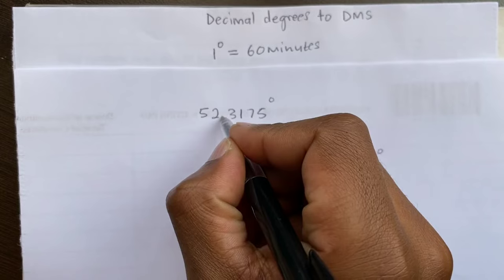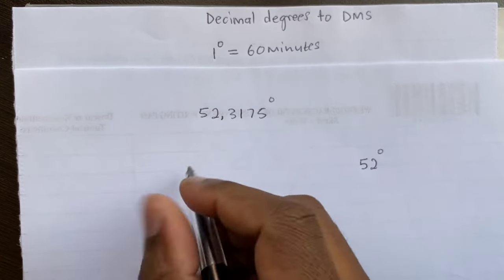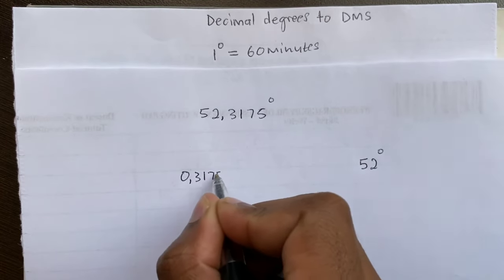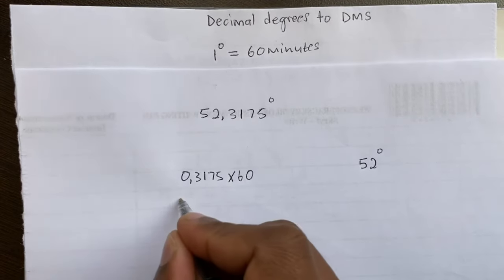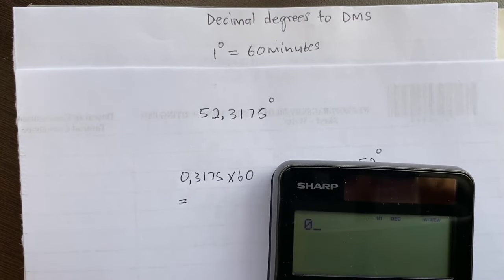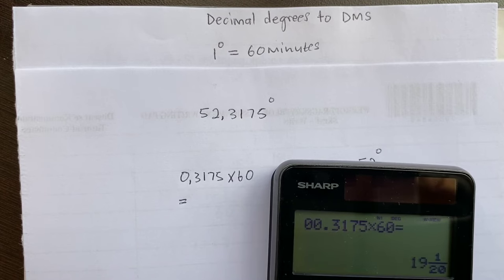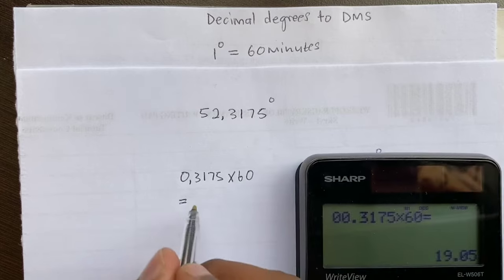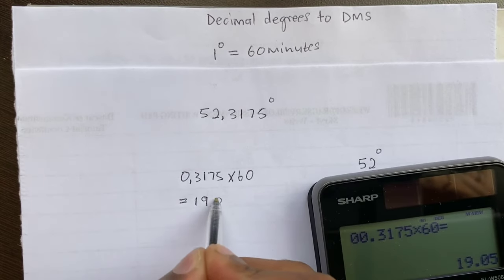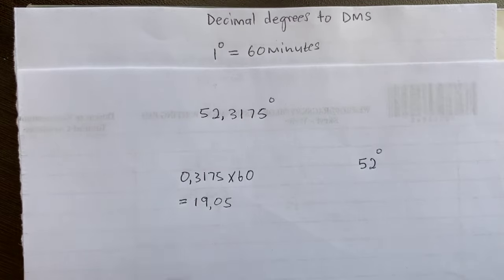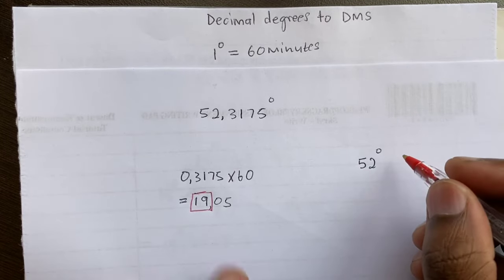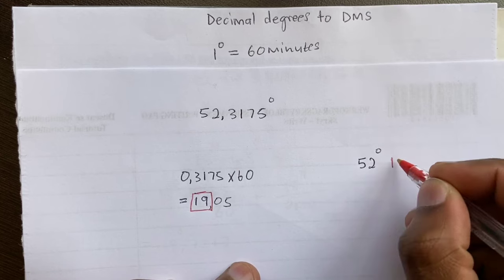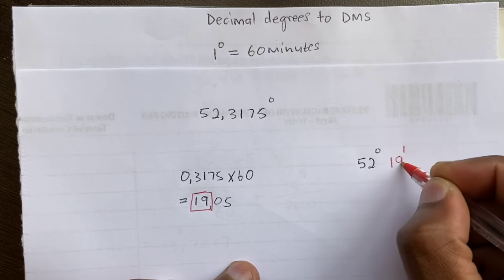Then take every number after the decimal point, which is 0.3175, and multiply by 60. So 0.3175 times 60 equals 19.05. You take the whole number 19 and write it as your minutes, so it's 52 degrees 19 minutes.